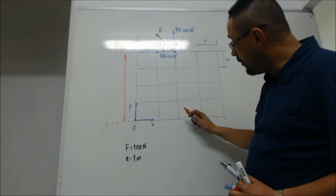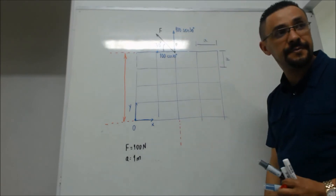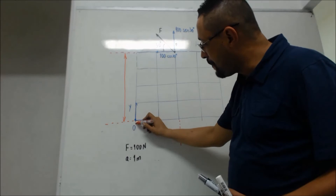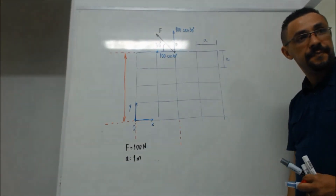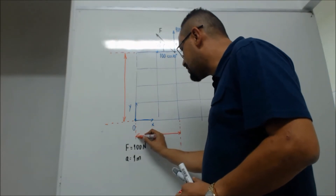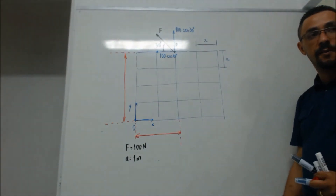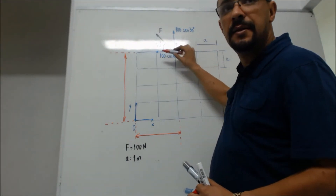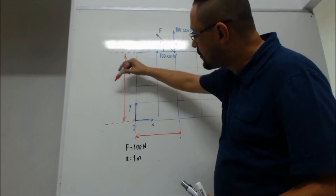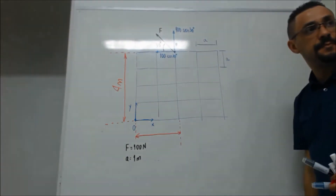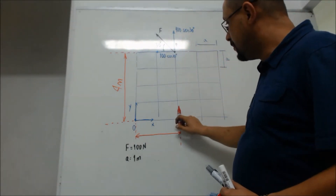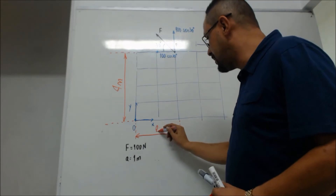Então, o braço dessa força — sem cosseno de 30 — vai ser quanto? Um, dois, três, quatro. Quatro metros. O braço dessa força com seno de 30: um, dois. Dois metros.